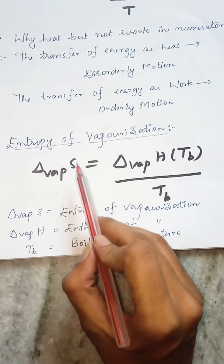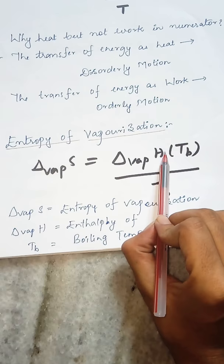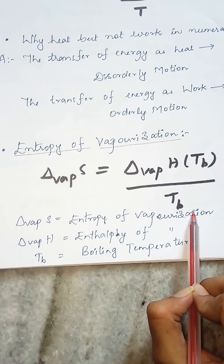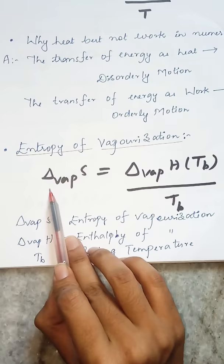Next concept: entropy of vaporization. The entropy of vaporization is equal to the enthalpy of vaporization at the boiling temperature Tb divided by its boiling temperature. In simple way, Δvap S = Δvap H(Tb) / Tb.